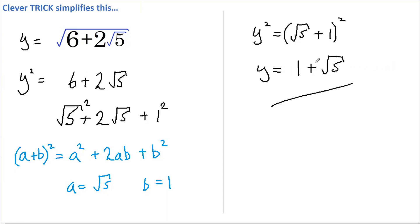If you're wondering why this isn't plus or minus root 5, that's because negative root 5 would make y negative. And if y was negative then the square root of 6 plus 2 root 5 would have to be negative. Which is impossible.